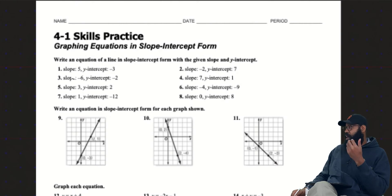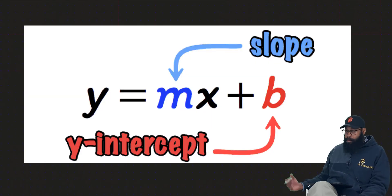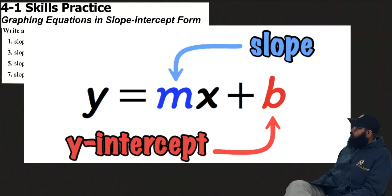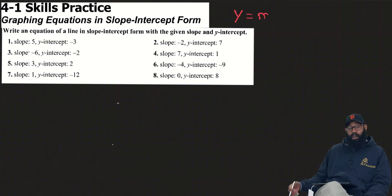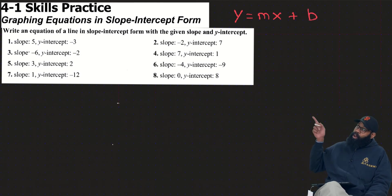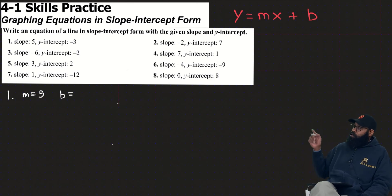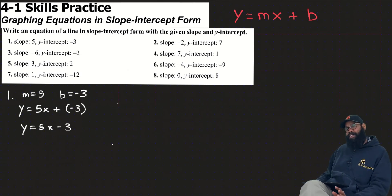Graphing equations in slope-intercept form. If you've been with me through Chapters 1, 2, and 3, now in Chapter 4 we're looking at y equals mx plus b. Write the equation of a line in slope-intercept form with the given slope and y-intercept. Our go-to is y equals mx plus b. If you have m (slope) and b (y-intercept), you're done. We have m equals 5 and b equals negative 3, so we plug in: y equals 5x minus 3.